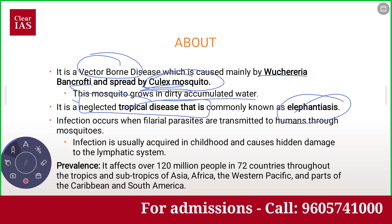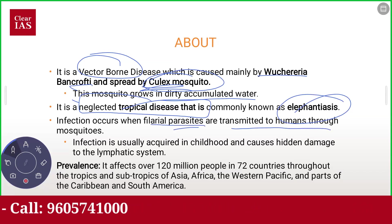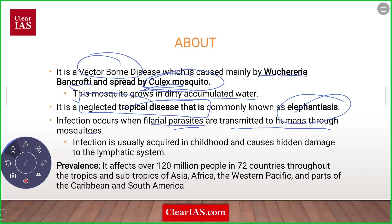Infection occurs when filarial parasites are transmitted to humans through mosquito bites. Infection is usually acquired in childhood and causes hidden damage to the lymphatic system. It affects over 120 million people in 72 countries throughout the tropics and subtropics of Asia, Africa, the Western Pacific, and parts of the Caribbean and South America.